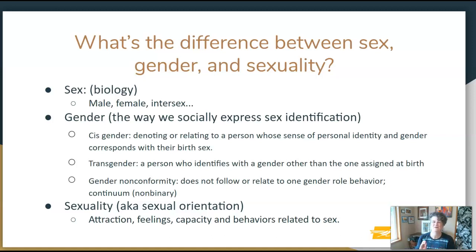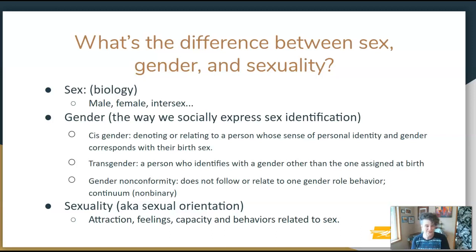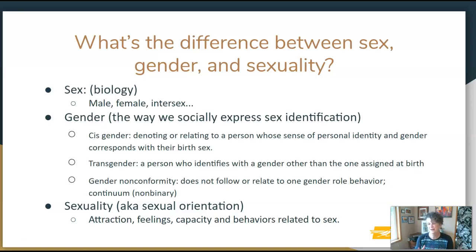People also ask about the difference between sex, gender, and sexuality. You'll take more classes on these, but here are the basics. Sex is the biology. Gender is the way we socially express our sex identification. There are a couple of important subcategories: cisgender, meaning you express yourself in the way society typically expects; transgender, meaning you identify with a gender other than the one assigned to you at birth; and gender non-conformity, which sees gender not as a binary but as more of a continuum.